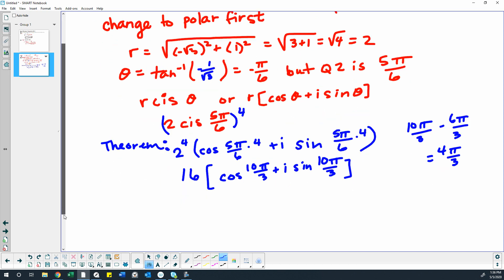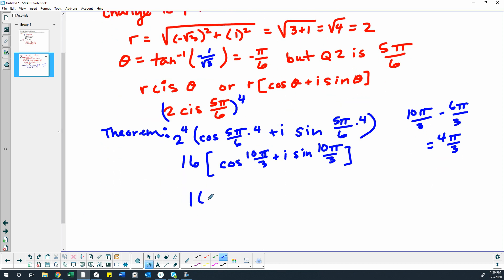Okay, so I'm going to do 16 times the cosine of 4 pi 3rds. So that's the third quadrant. And the cosine of pi 3rds is 1 half, but it's the third quadrant, so it's negative 1 half. And then the sine of 4 pi 3rds, also third quadrant, also negative, but it would be negative square root of 3 over 2.